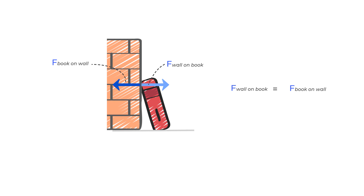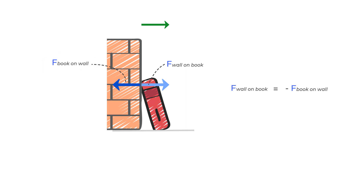Following the sign convention, if we take one direction as positive and put a negative sign on the opposing force, then since they are equal and opposite, their vector sum becomes zero — and that is exactly what happens when we apply the negative sign. The sum becomes zero.